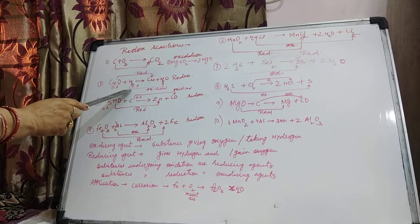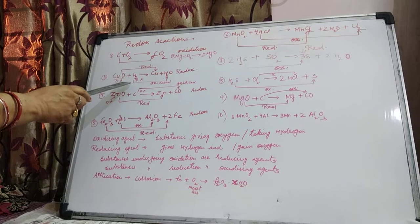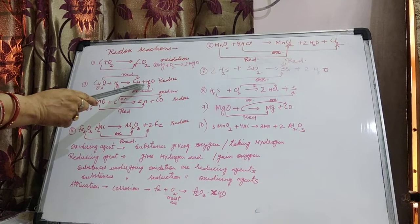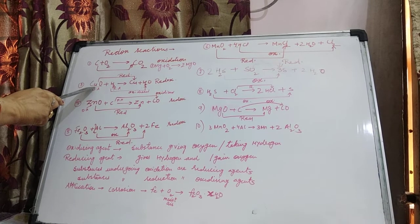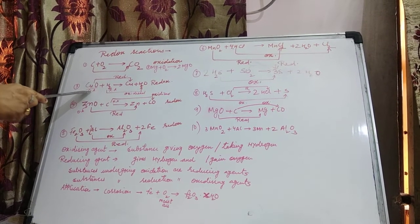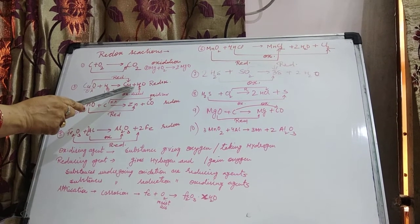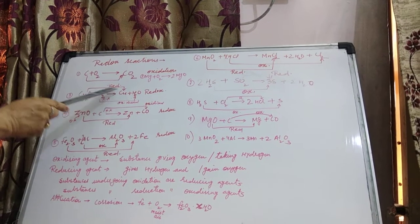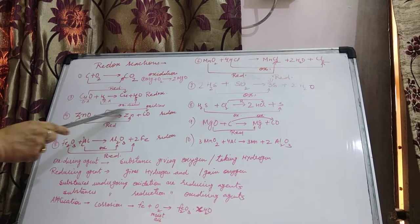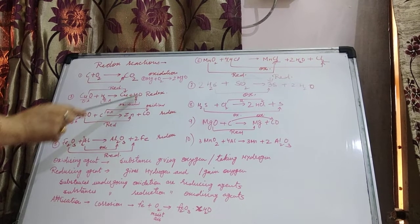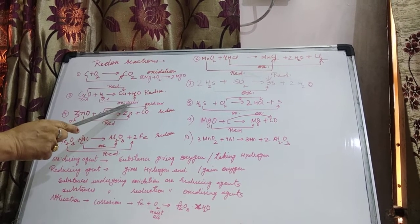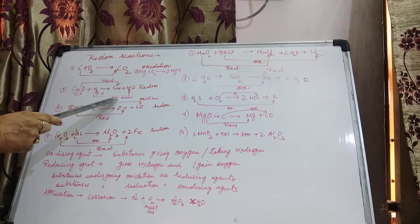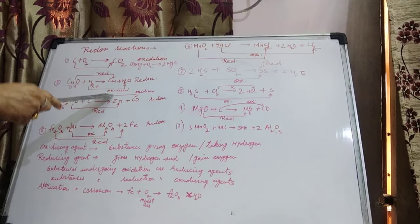Now I am taking reactions in which both Oxidation and Reduction take place simultaneously. CuO reacting with Hydrogen gives Copper and Water. CuO is being converted into Cu — Oxygen is getting removed, and removal of Oxygen is called Reduction. Meanwhile, Hydrogen is being converted into H₂O — addition of Oxygen, so that is Oxidation. Both Reduction and Oxidation occur simultaneously, so the reaction is Redox.